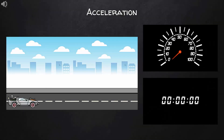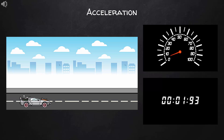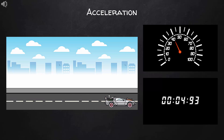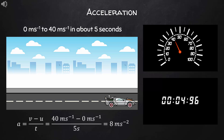Let's take a look at that acceleration example again. The car accelerated from 0 meters per second to 40 meters per second in about 5 seconds. We could calculate the acceleration of the car to be 8 meters per second squared.